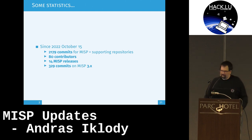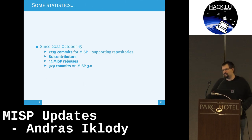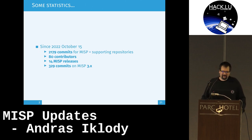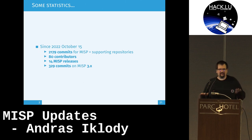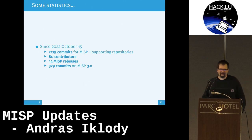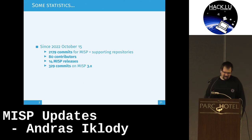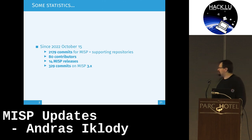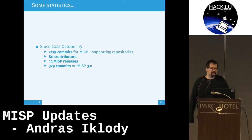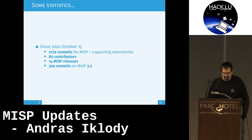Since a year ago, we've had a total of almost 2,200 commits. We have 80 contributors that have contributed to the MISP software and its supporting libraries. We've had a total of 14 releases, so we are now settling in on that monthly cadence. We've also had a total of almost 330 commits on the 3.x branch — it's the biggest overhaul we've done so far of the software, moving to a new framework.